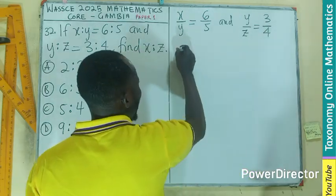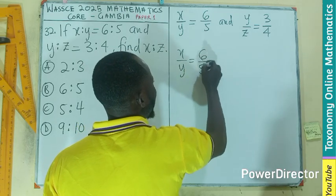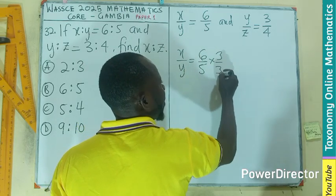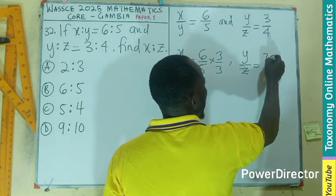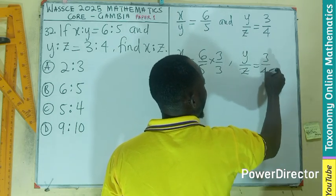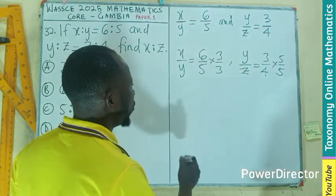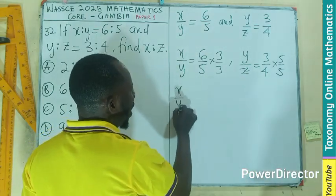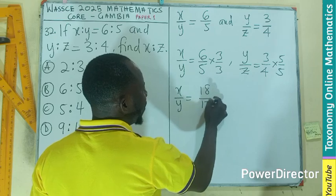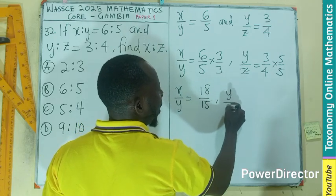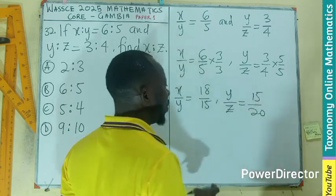So I'm going to have x over y equals 6 over 5, multiplied by 3 over 3. Then y over z equals 3 over 4, multiplied by 5 over 5. If you do so, your x over y will now become 18 over 15, and y over z will now become 15 over 20.